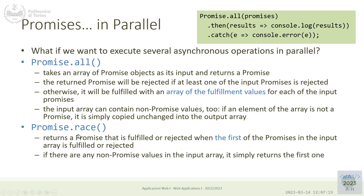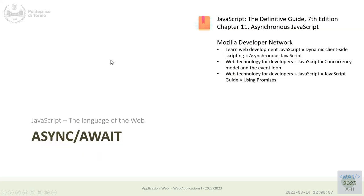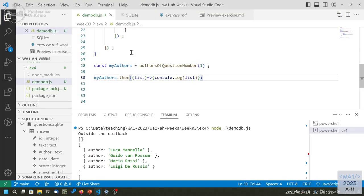Another option is to run operations in parallel and act when the first one completes — that's `Promise.race()`. For parallel promises, the operations must be independent, since none of them can depend on the result of another. These are more advanced usage patterns.